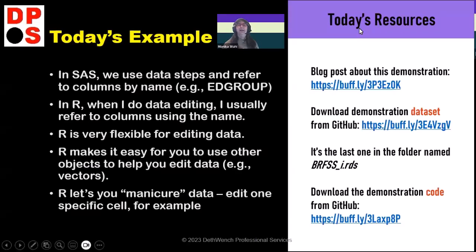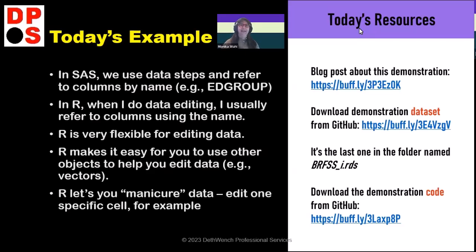I'm going to use BRFSS data today — that's health surveillance data where you call people on the phone and ask them things like do you have diabetes, how old are you, and so on. In SAS, we use data steps and refer to columns by name. In the BRFSS, there's a variable for education called educa, which has around ten levels — too many. So I pre-processed this data and created a transformed variable called ed_group with fewer levels.